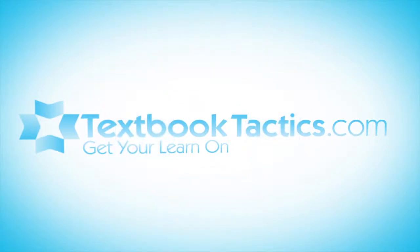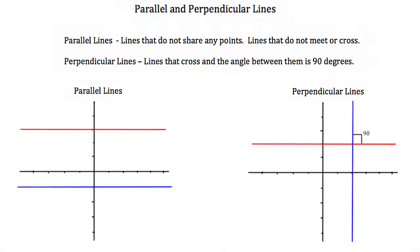This is a tutorial on parallel and perpendicular lines. Parallel lines are lines that do not share any points, or lines that do not meet or cross. Perpendicular lines are lines that cross and the angle between them is a perfect 90 degrees.